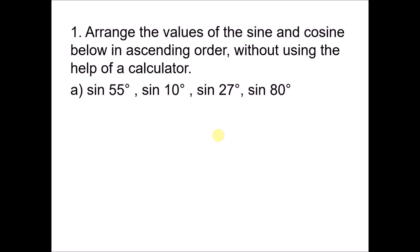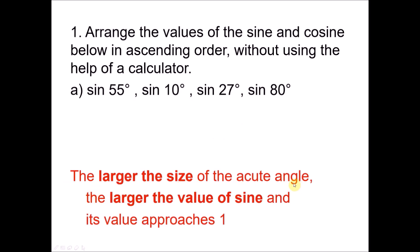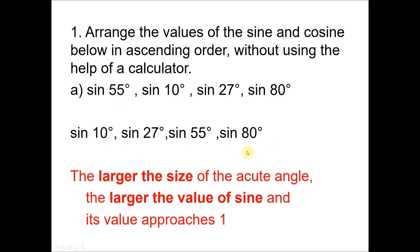From the previous video, we learned that the larger the size of the acute angle, the larger the value of sine, and its value approaches 1. Since we want to arrange in ascending order, we start with the smallest number first. The smaller the angle, the smaller the sine value. So the answer is: sine 10°, sine 27°, sine 55°, sine 80°.